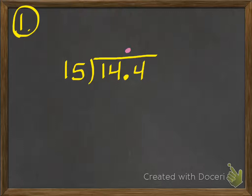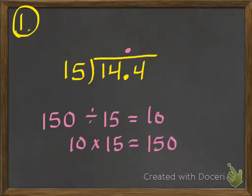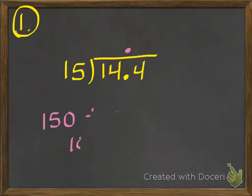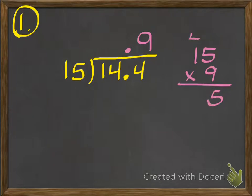Now before we do some division, let's think about an estimation. I've got 15, and 144 is pretty close to 150. 150 divided by 15 looks an awful lot like 10 times 15, which would be 150. So my answer is probably going to be close to 10. I know it's not going to be 10, because that would be 150, so it's probably going to be the next digit, which would be 9. So let's give 9 a try: 9 times 15. Over here I'm going to use my space to do some multiplication. 9 times 5 is 45, carry the 4. 9 times 1 is 9, plus 4 is 13. So I get 135.